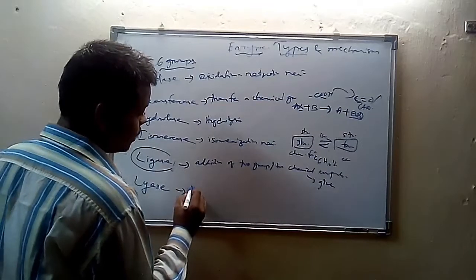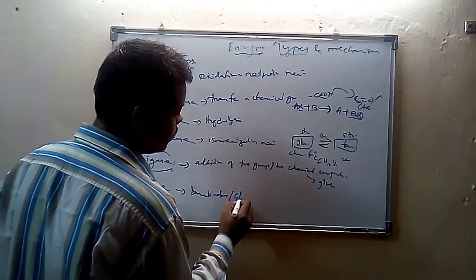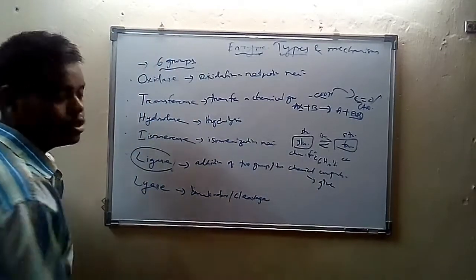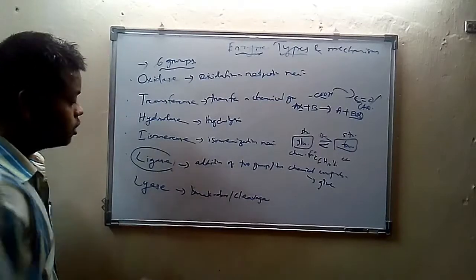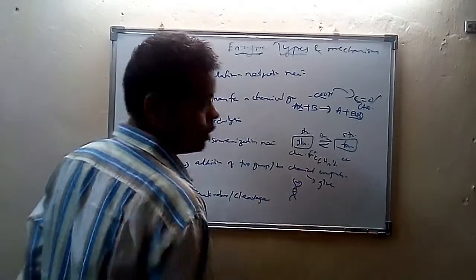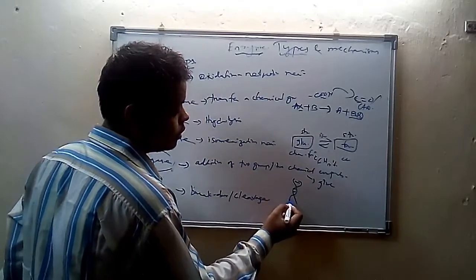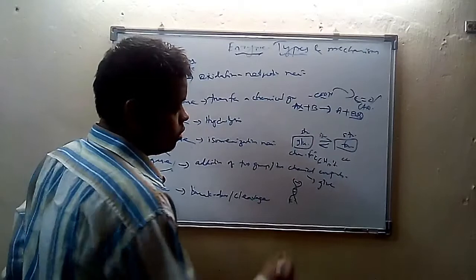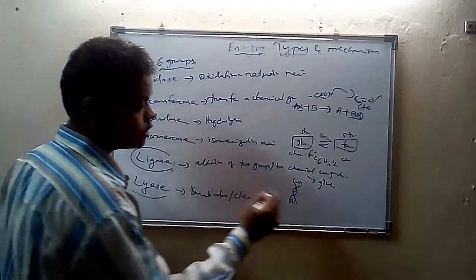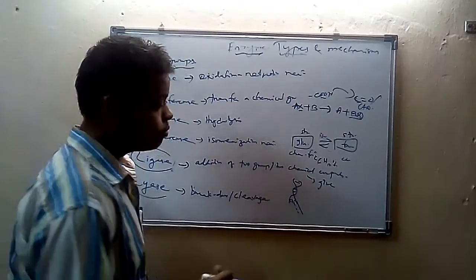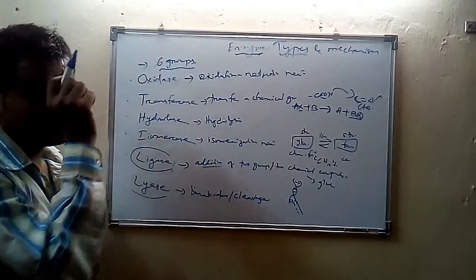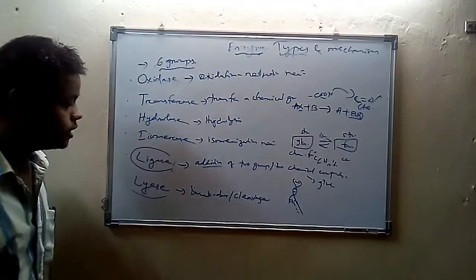Then lyase. Lyase enzymes help in breakdown or cleavage of any substance or chemical. For example, in a DNA strand during replication, the first step is the breaking of hydrogen bonds between the nitrogen bases — this breaking or cleavage is done by lyase enzyme. Then in the next stage, when Okazaki fragments are joined together, the joining or addition function is done by ligase enzyme.